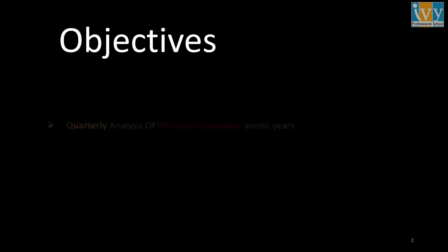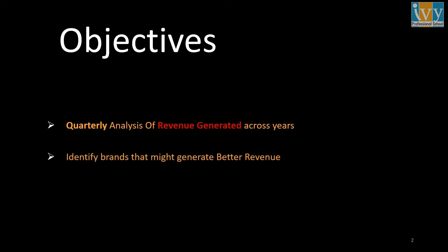So these are the objectives. Firstly, we are going to look at the quarterly analysis of revenue generated over 15 years — the data ranges from 2004 all the way to 2019. Next, we're going to look at the brands which might generate better revenues, comparing brands that perform well versus those that could do better. And finally, we're going to compare the revenues generated by various brands. Let's have a look at the dashboard to understand where I got the insights from, and I'll be referring to it later in the presentation as well.